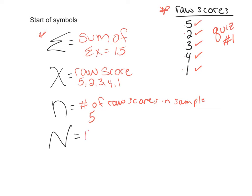Now N, big N, is the number of raw scores—same premise but in a population. So if I gave a pop quiz in all my Psych 101 classes, I gave it to five in my 9 a.m. class and my 10 a.m. class, but if I add them all together, capital N would be my number of raw scores in my entire population.